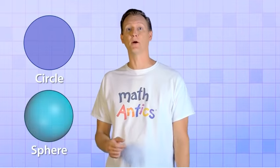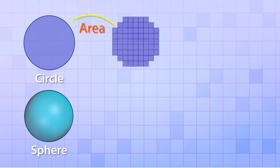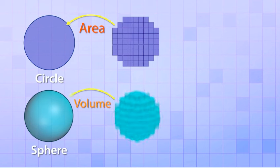To see how that works, take a look at this 2-D circle and this 3-D object called a sphere, which is like a ball. Just like you can use a bunch of small squares to approximate the area of the circle, you can use a bunch of small cubes to approximate the volume of the sphere.